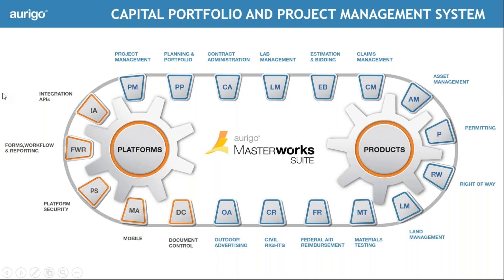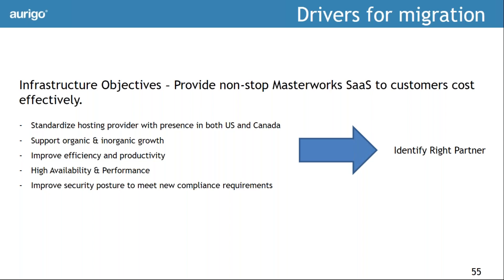Masterworks is not just a product — it's a platform. On top of it we've built modules including Project Management, Document Control, Civil Rights, Federal Aid Reimbursements, and Claims Management. When a customer chooses Masterworks, they select which modules they need and use them in SaaS mode.